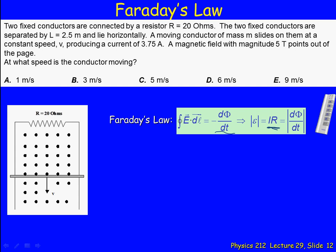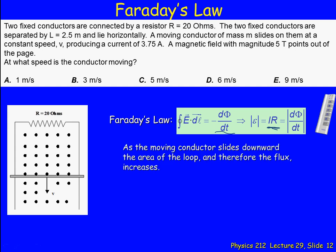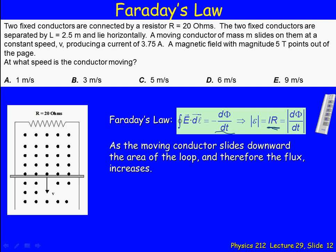So IR equals dΦ/dt. We're ignoring the minus sign because we already have the direction taken care of. The question is, how fast is the flux changing?